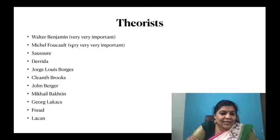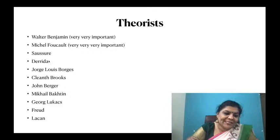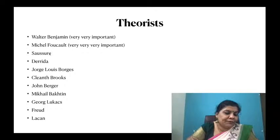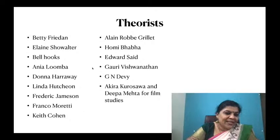Very important theorists: Walter Benjamin — A Work of Art in the Age of Mechanical Reproduction; Michel Foucault — very, very important; Power Politics is also by Atwood but not an essay collection. For MA entrance, these theorists will be asked: Walter Benjamin, Michel Foucault, Ferdinand de Saussure, Jacques Derrida, Jorge Luis Borges, and Cleanth Brooks. I will come back with question-answers another day.